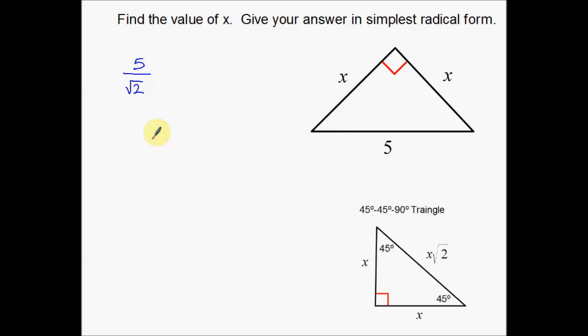So what we have to do in this situation, if we want to give our answer in simplest radical form, this is not the simplest. This radical on the bottom is very messy. So what we're going to do to get rid of this radical on the bottom, to get rid of that square root of 2 on the bottom, we're going to multiply by the square root of 2 on top and on bottom.